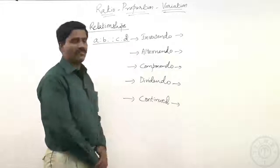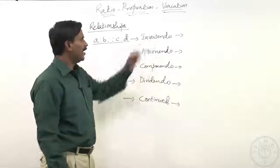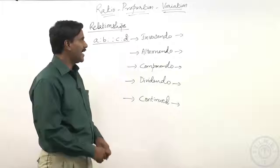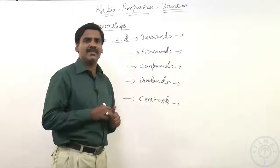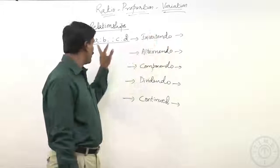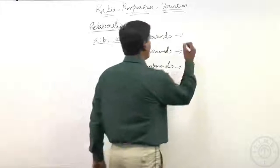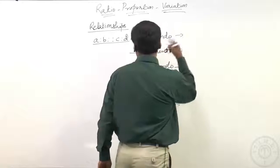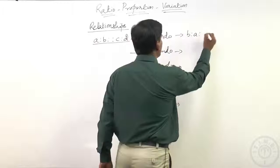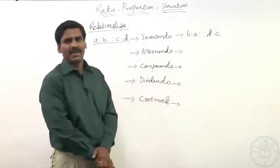If a is to b is in proportion with c is to d, let us focus on the different relationships. Earlier we focused on inverse ratio — inverse ratio means reversing the terms. Like a is to b if it is the ratio, b is to a is the inverse ratio. So if you are focusing on invertendo, we will be reversing the first two terms and the second two terms. So b is to a in proportion with d is to c — that is what we call invertendo.